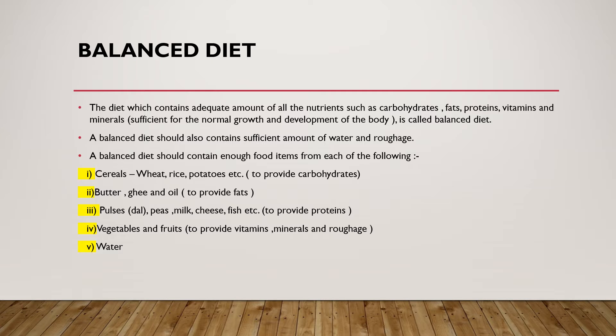Cereals — including wheat, rice, and potatoes — provide carbohydrates, which give us energy to do work. Next, butter, ghee, and oil provide us fats. Pulses, dal, and peas provide us with protein.